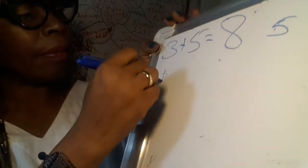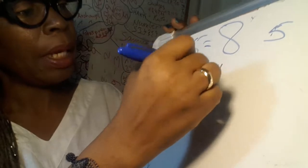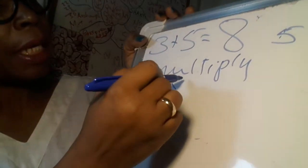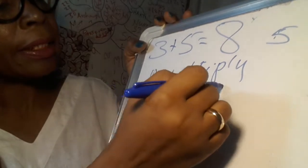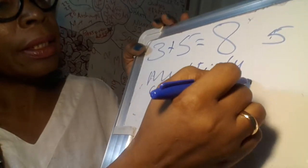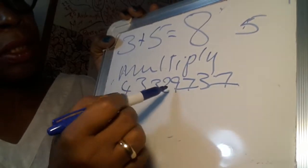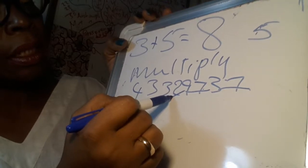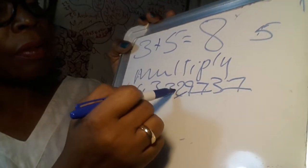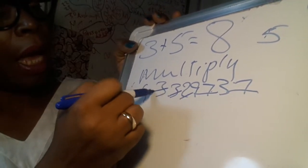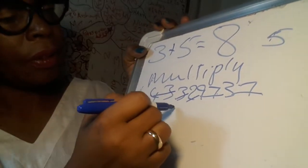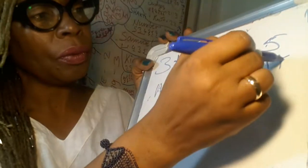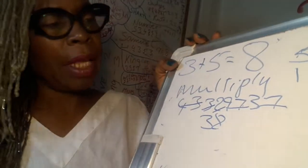Then we have multiply, M-U-L-T-I-P-L-Y. So four, three, three, two, nine, seven, three, seven. This is ten, twenty-six, twenty-eight, thirty-one, and seven is thirty-eight. So this would be eleven, which is two.